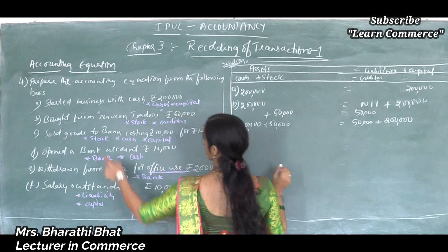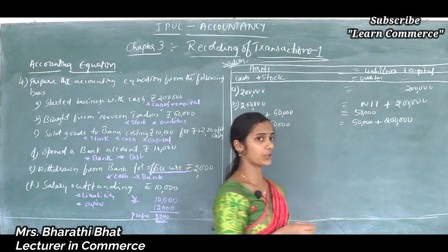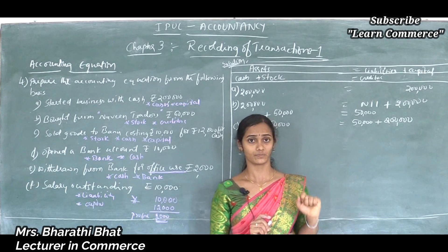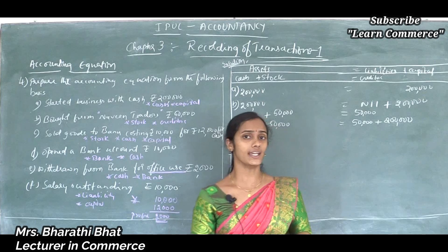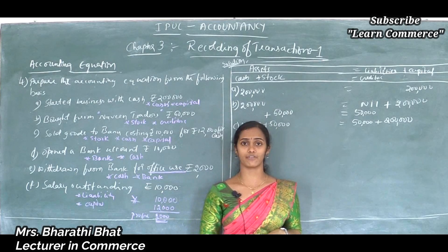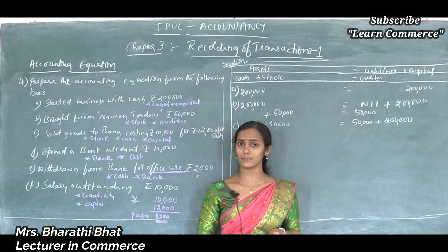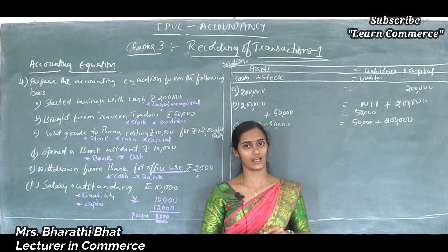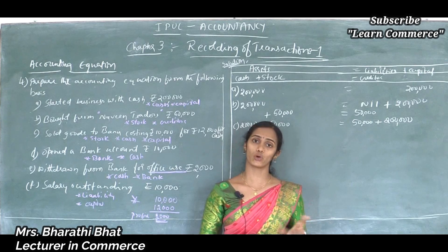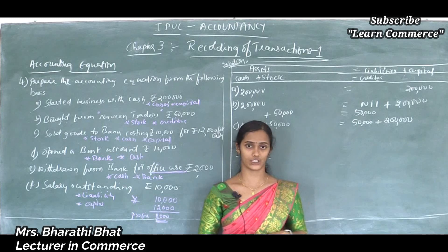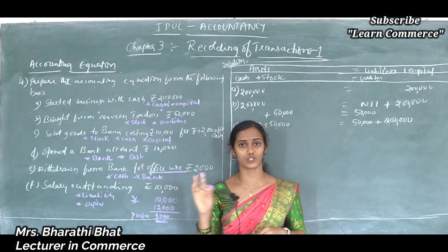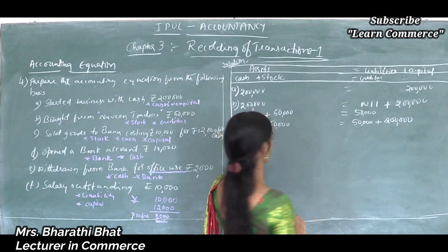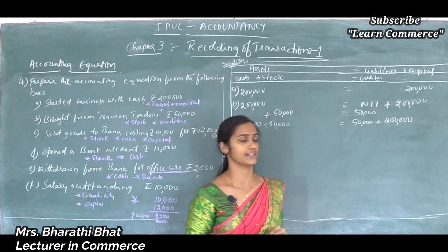Next, sold goods to Banu costing rupees 10,000 for rupees 12,000 for cash — three accounts are affected. Usually most transactions affect two accounts, but sometimes a transaction affects more than two, maybe three or four accounts depending on the transaction. Here one transaction affects three different accounts: one is cash, another is stock, and one more is capital.